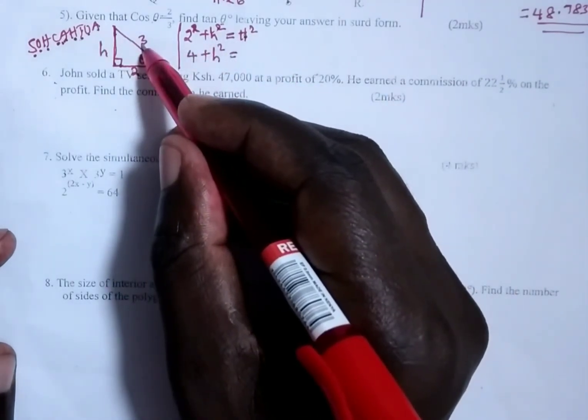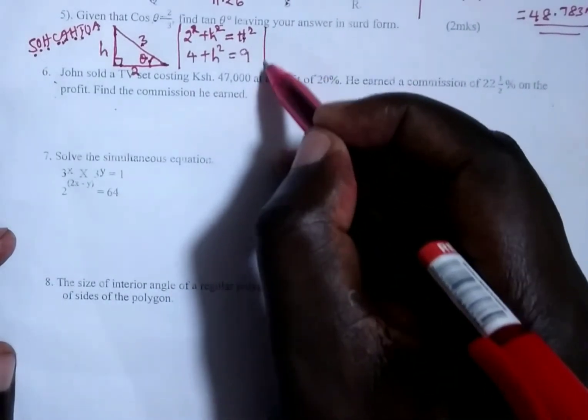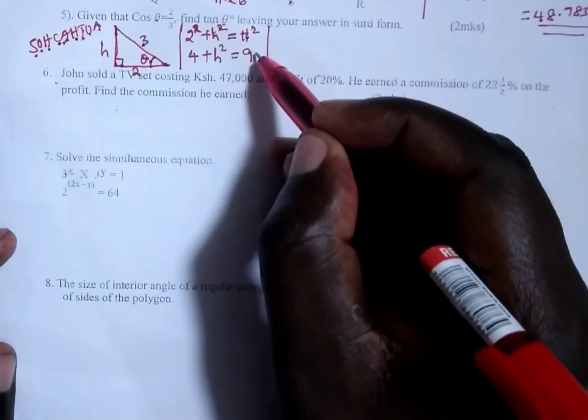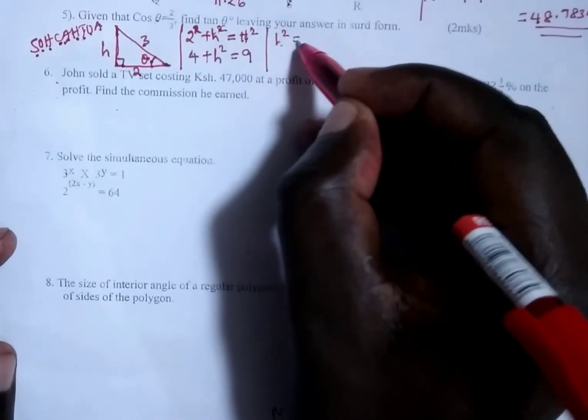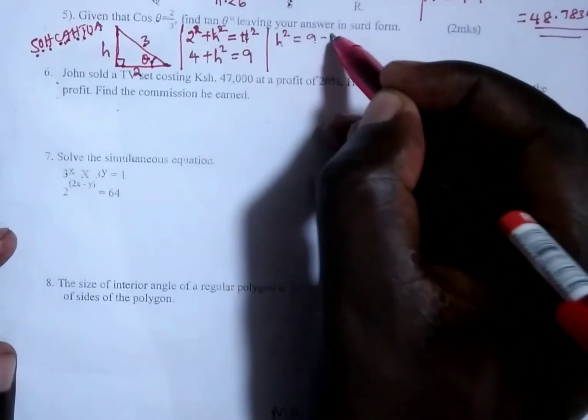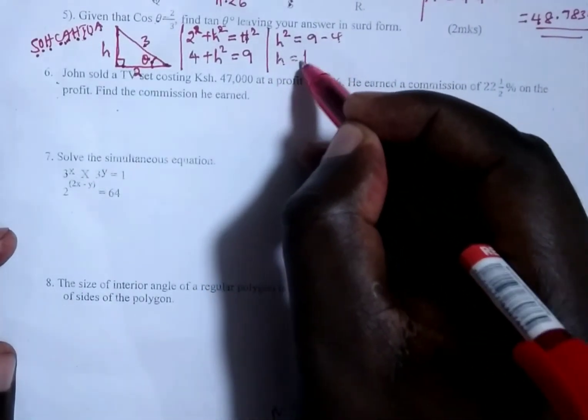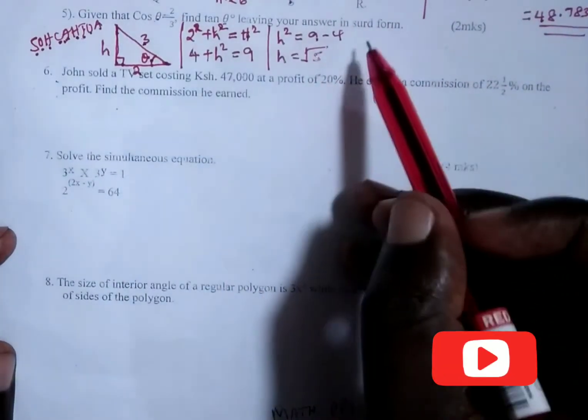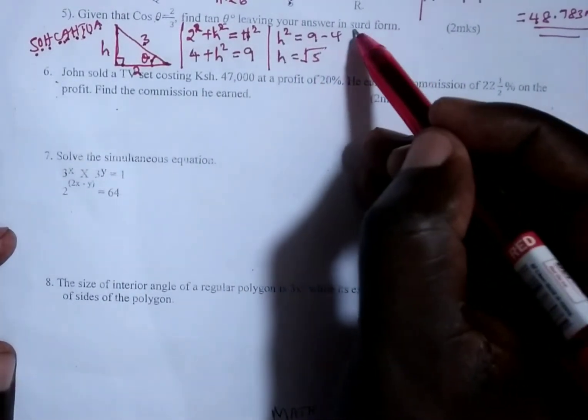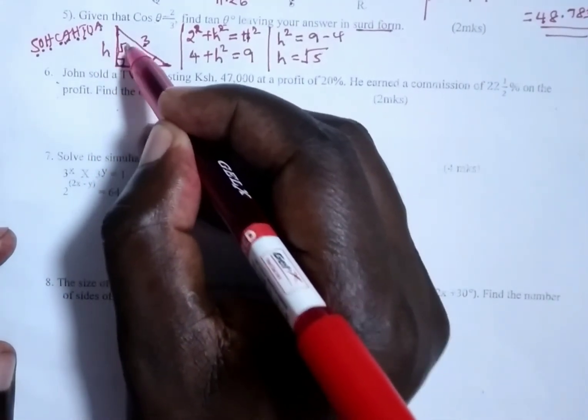And since the hypotenuse is 3, 3 squared is going to give us 9. If we take 4 to the other side, we are going to have h² being equal to 9 minus 4. And to get h, we are going to take the square root of 9 minus 4, which is 5. Since we are supposed to leave our answer in surd form, we are going to maintain our height to be √5.